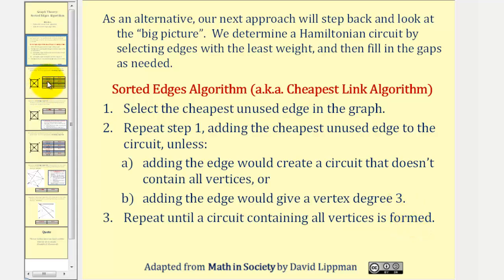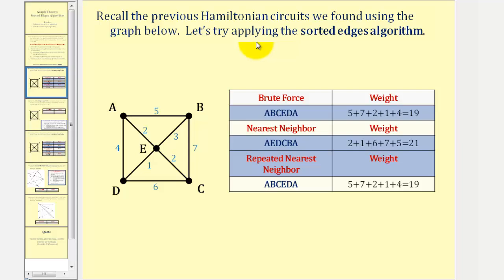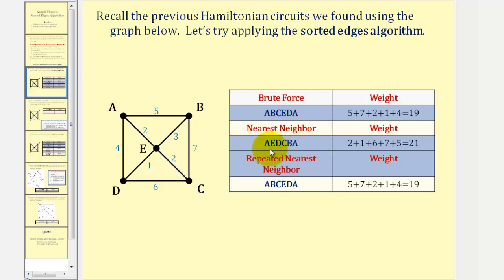In our past several lessons, we found the Hamiltonian circuits of the given graph, where using the brute force algorithm, we found the circuit A, B, C, E, D, A with a total weight of 19, which we knew was the lowest cost Hamiltonian circuit. Then we applied the nearest neighbor algorithm and found the Hamiltonian circuit A, E, D, C, B, A that had a total weight of 21.